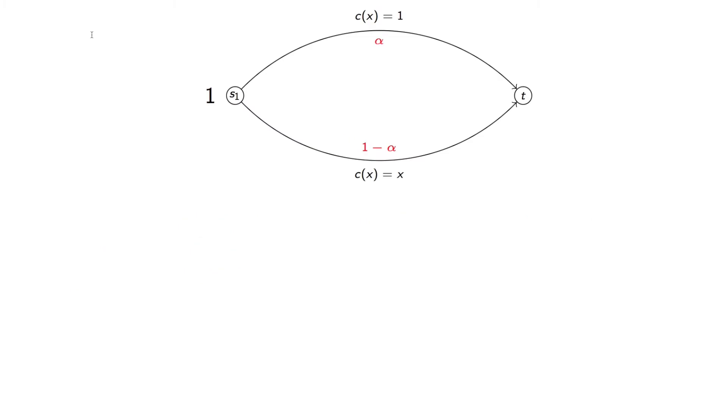And so here is a game, this game is called Pigou's Example. We have one commodity, units of traffic one, that is non-atomic so it can be divided up, that needs to go from this source to this sink. What we also have is the latency for this edge, which is simply always one, and the latency for this edge is simply the quantity of traffic that goes through here.